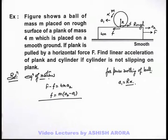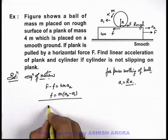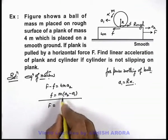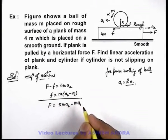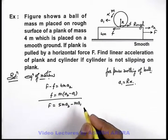And if we add the two equations, we'll get F equals 5ma₂ minus ma₁. This expression we'll get.